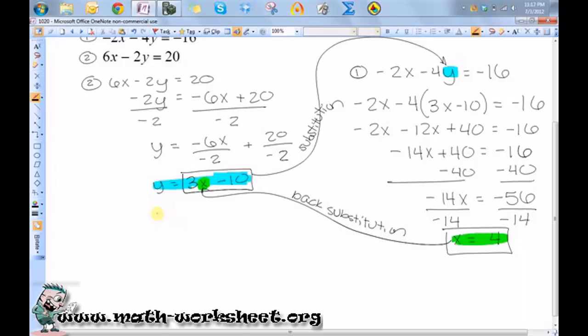So now I just need to put a 4 in for x. So we have 3 times 4 minus 10. So y equals 12 minus 10. So y equals 2. Because this represents where these two lines intersect, I need to write it as an ordered pair. So x equals 4 and y equals 2.